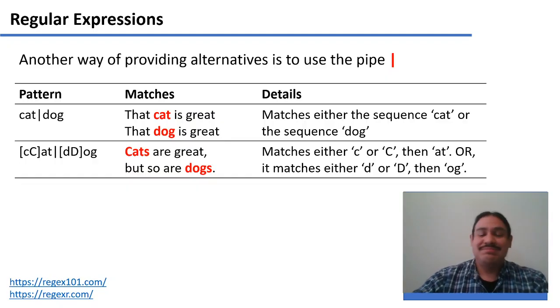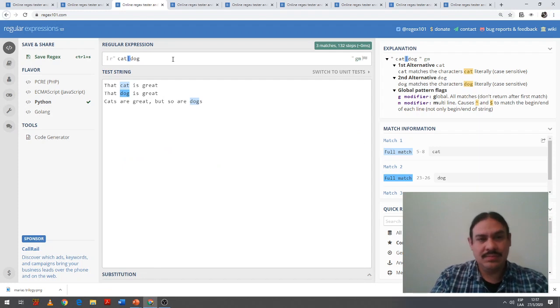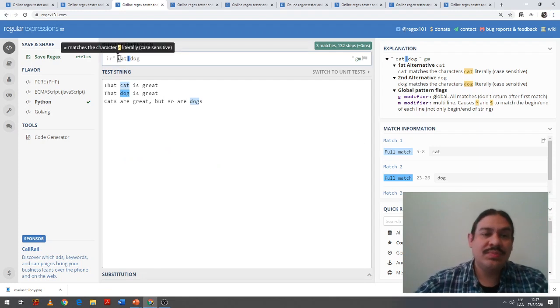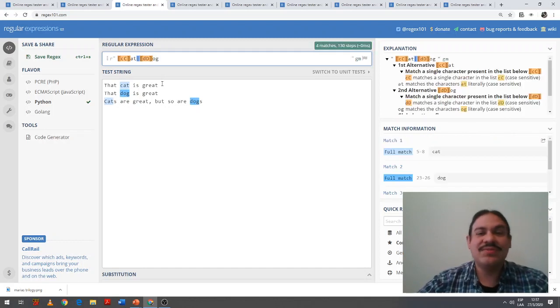We can use, same as we did before, square brackets C lowercase, uppercase AT, or D uppercase, lowercase OG, to find cats or dogs in either uppercase or lowercase. That regular expression finds every instance of cat or dog, regardless of whether it's uppercase or lowercase.